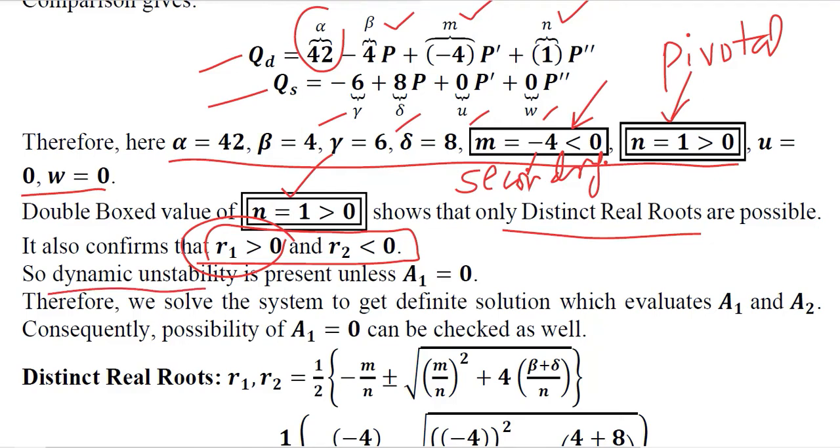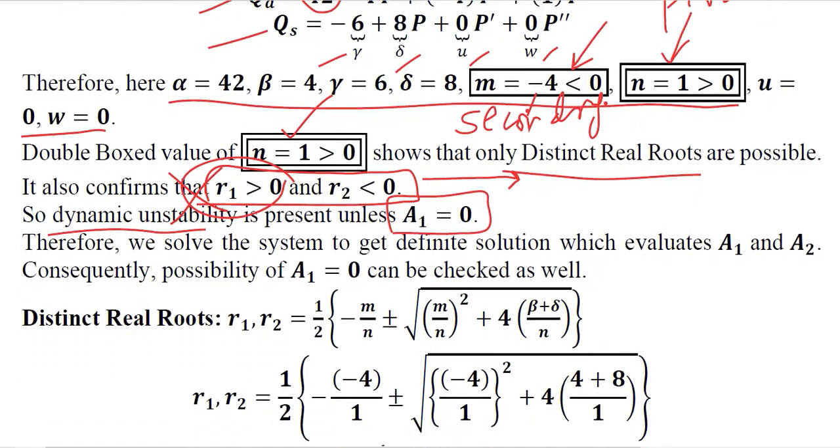Since there is a positive root, dynamic stability will be endangered. For that we have to consider that A1 is equal to 0 so that this term disappears and only the negative root remains in the Yc function, and it becomes dynamically stable due to exponential decay.